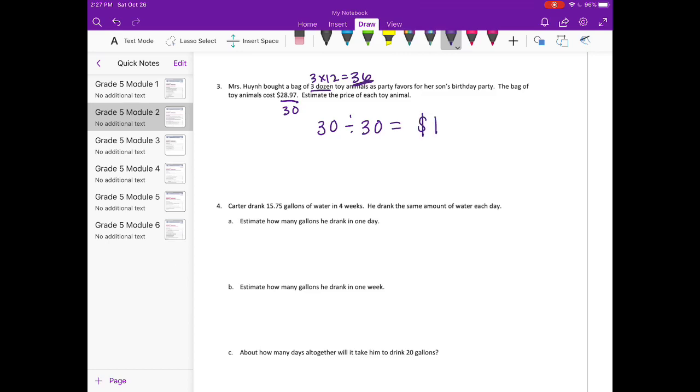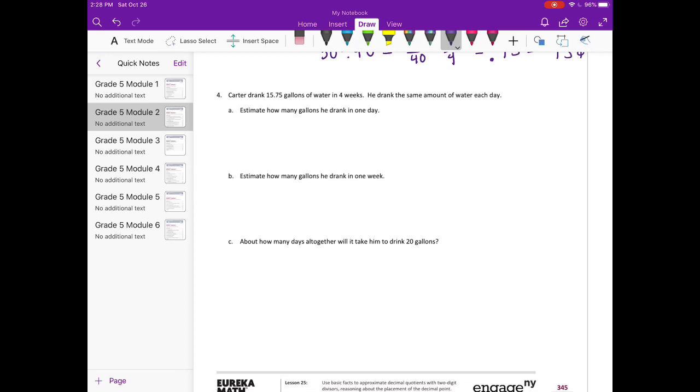Or if we did $30 divided by 40, we'd get 30/40, which equals 3/4. As a decimal, that's 0.75 or 75 cents. So it's somewhere between $1 and 75 cents. Either estimate would work. We're estimating, so there can be more than one answer.